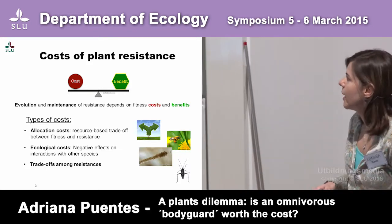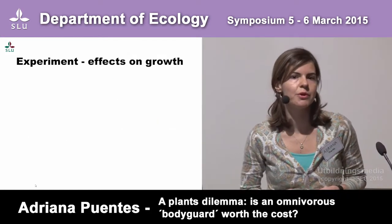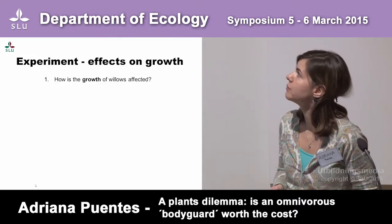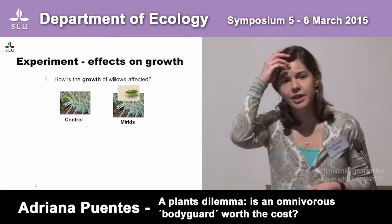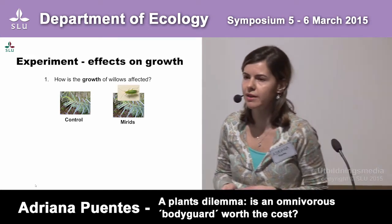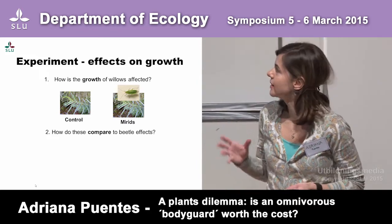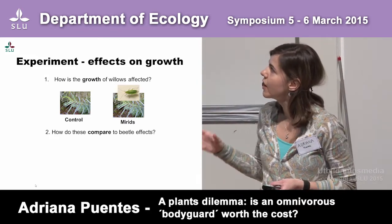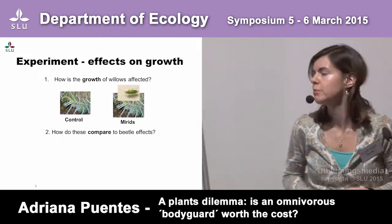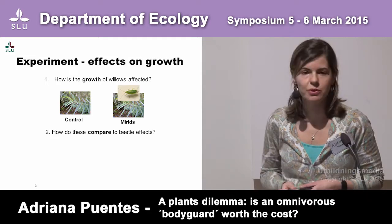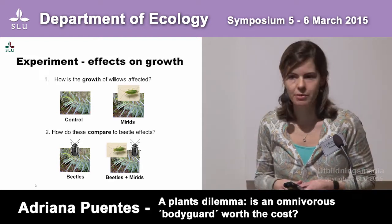With this framework in mind, I set up a greenhouse experiment to test how these myrid bugs affect the growth of willows. I exposed different Salix genotypes to feeding by the myrids. Since this is a tritrophic interaction, I also compared conditions: plants exposed to myrids only, plants exposed to beetles only, and plants exposed to beetles and myrids together.